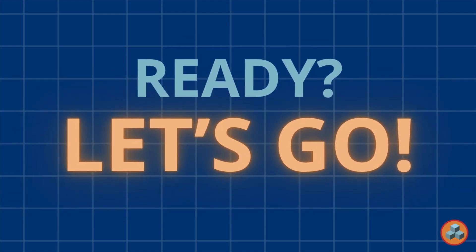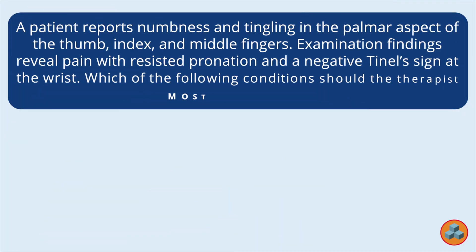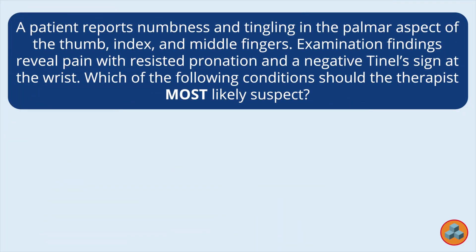Ready? Let's go! A patient reports numbness and tingling in the palmar aspect of the thumb, index and middle fingers. Examination findings reveal pain with resisted pronation and a negative Tinel sign at the wrist. Which of the following conditions should the therapist most likely suspect?